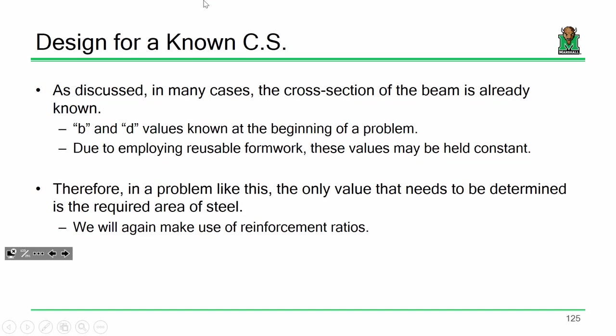That's not the case when we design a beam with a known cross section — we know what the beam looks like, so all we have to do is solve for the steel. The design process for a member with a known cross section is a lot easier. This comes about when we're using something like precast elements where all the formwork is ready-made and predetermined. All we have to do is start selecting some rebar.